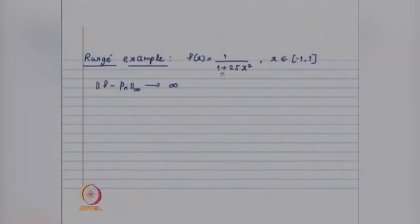One disadvantage with piecewise polynomials is that they are not smooth — they lack differentiability at partition points — but when integrating, that does not matter. So for the composite rules we are going to get good results and convergence. For the Runge example, the norm of f minus pₙ tends to infinity, and integrating pₙ gives an error that increases rather than decreasing.